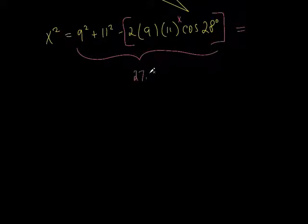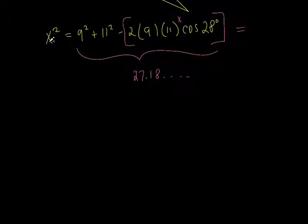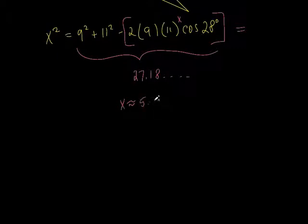You should get about 27.18. Now, what do you do to get x by itself? Take the square root. To get rid of the square, you've got to square root all of this. Hit the square root button, and you should get your answer — about 5.2.